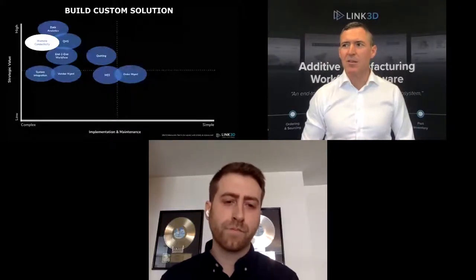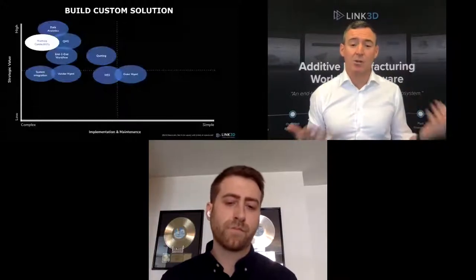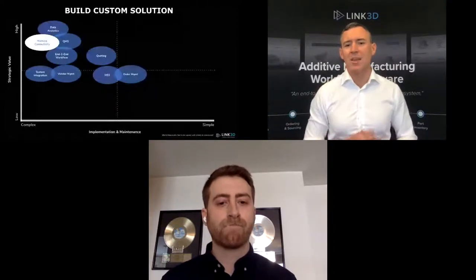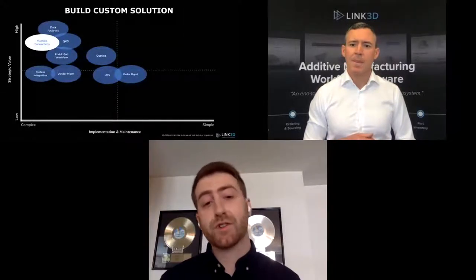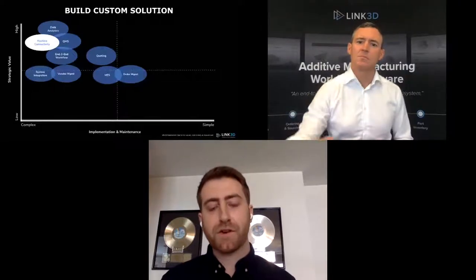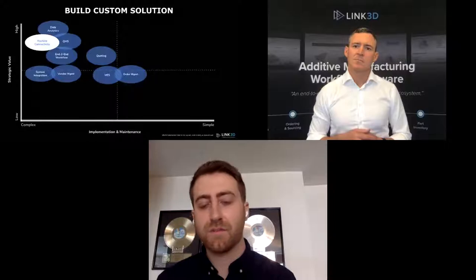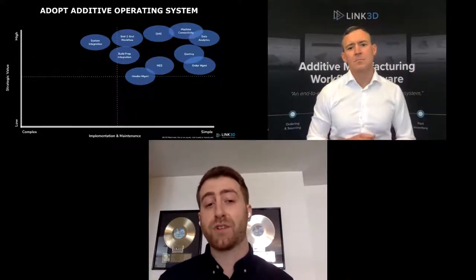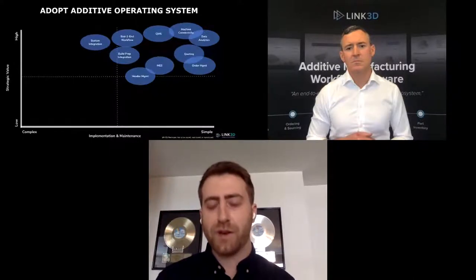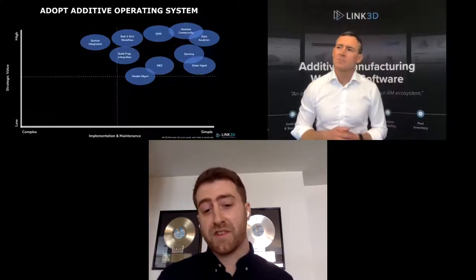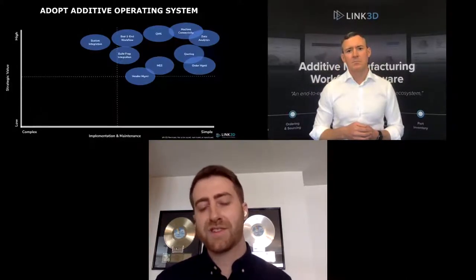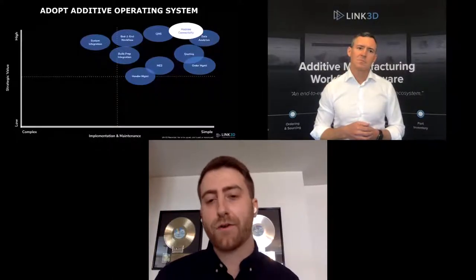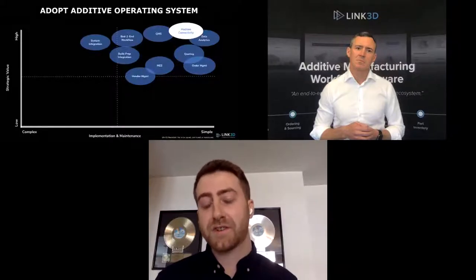Machine connectivity ranges from simple visibility — is it on or off — all the way to pushing and pulling information from the machine to streamline operations. When adopting an additive ecosystem, everything shifts to the top right: simpler implementation and maintenance while keeping high strategic value. Build prep integration wouldn't even be possible with a custom solution — that's an additional benefit. Machine connectivity now becomes simple implementation with high strategic value, because you have a dedicated team where this is their core business, acting as a translation or gateway layer — one system rather than multiple.